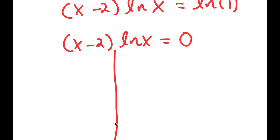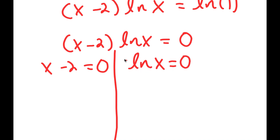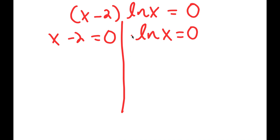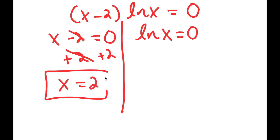This gives me two equations: I have x minus 2 is equal to 0, and I have ln of x is equal to 0. These are my two equations for this problem. For x minus 2 equals 0, this is simple to solve — all I have to do is add 2 on both sides, so these cancel out and I get x is equal to 2. So this is one solution of x.